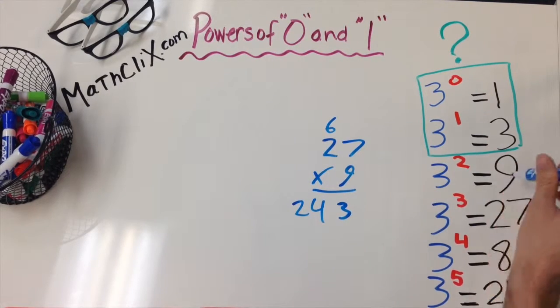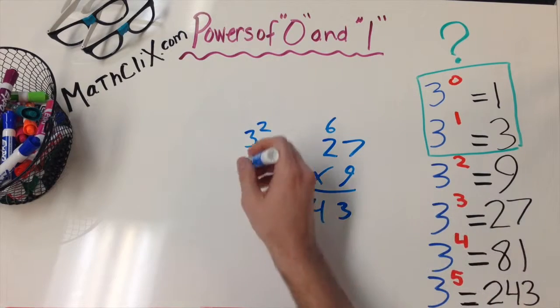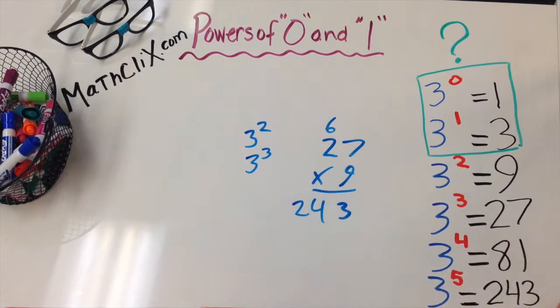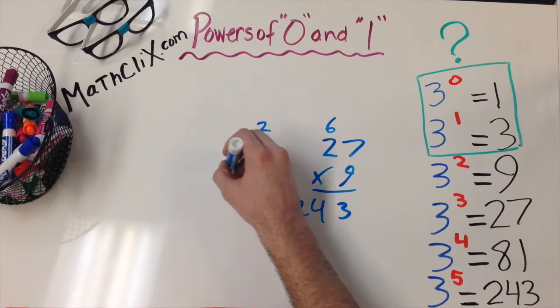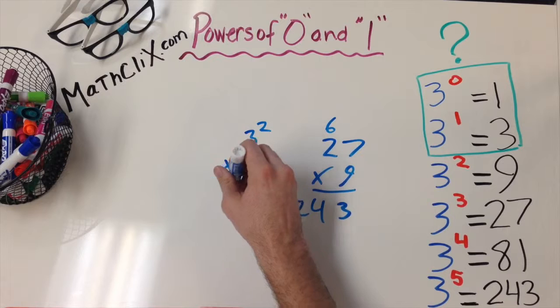Well, since we can write 9 as 3 to the 2, and 27 is 3 to the 3, and we multiply those, well, I've already shown you here that 243 is the 5th power of 3.